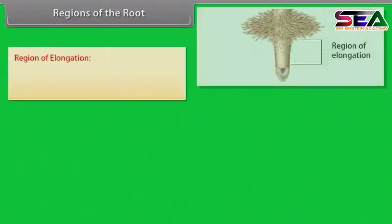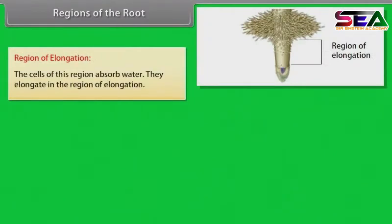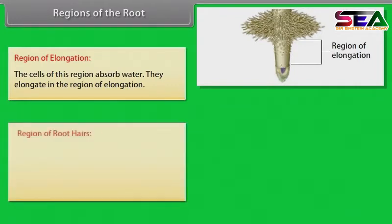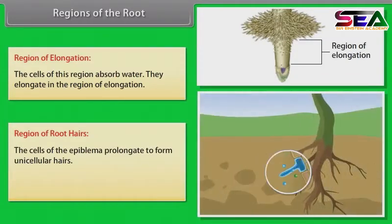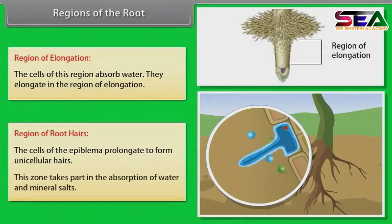Region of elongation. The cells of this region absorb water and elongate. Region of root hairs: the cells of the epiblemma elongate to form unicellular hairs. This zone takes part in the absorption of water and mineral salts.